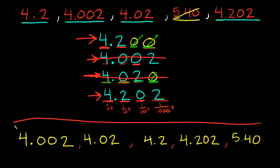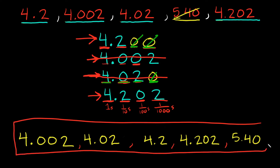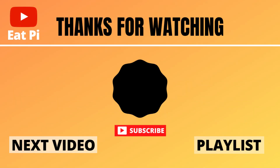Alright, so as you can see our decimal numbers are finally listed from least to greatest — that's your answer. That's how you order them. I hope the video was helpful. If it was, definitely leave a thumbs up below, and if you still have questions leave them in the comments and I'll do my best to help. There's also a playlist at the end of the video, so if there are other topics you need help with, definitely check those out.